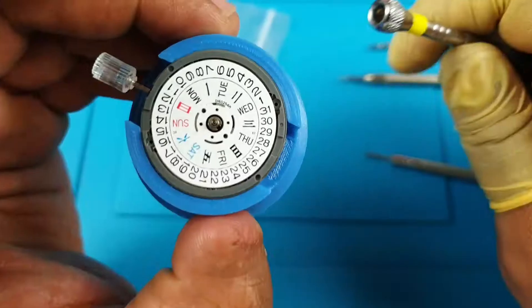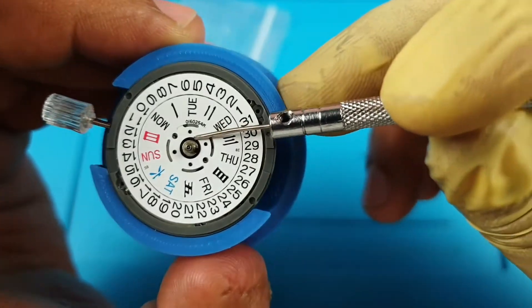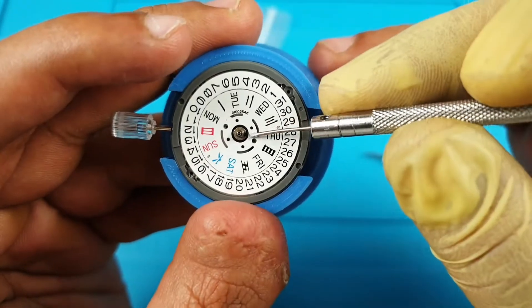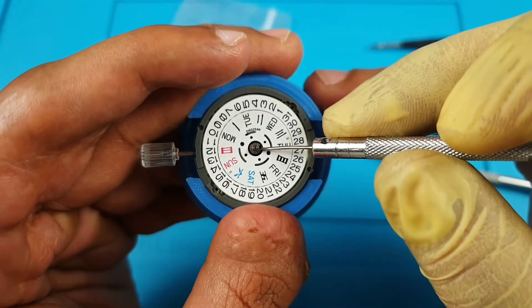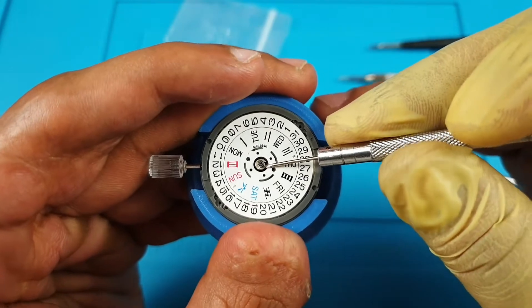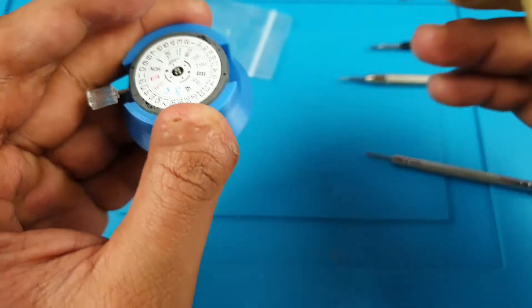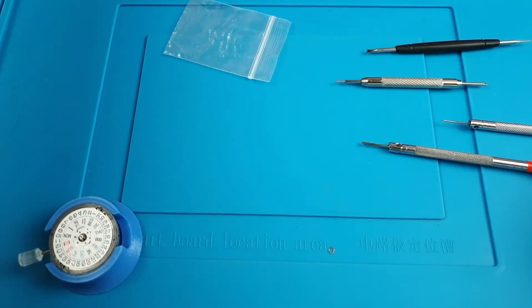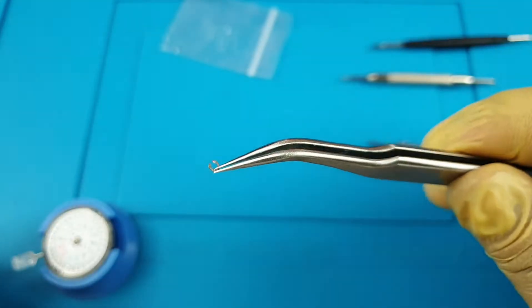Right, so the first thing which we need to do is remove that day disc. In order to do that, that day disc is held down by this little C-clip, or it's known as the snap. Now the way you take that out, you need to get a very thin and small screwdriver and just slowly ease it in underneath one of those feet and just turn. As you saw, it will fly off.